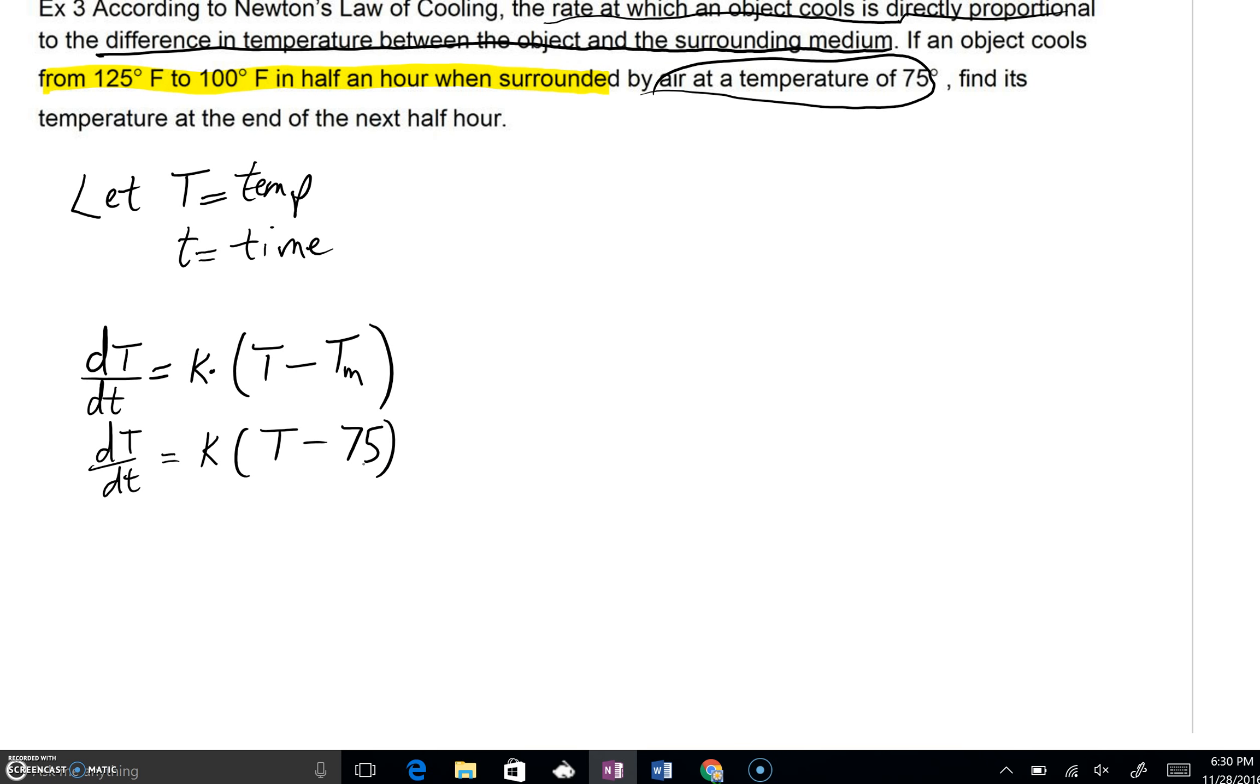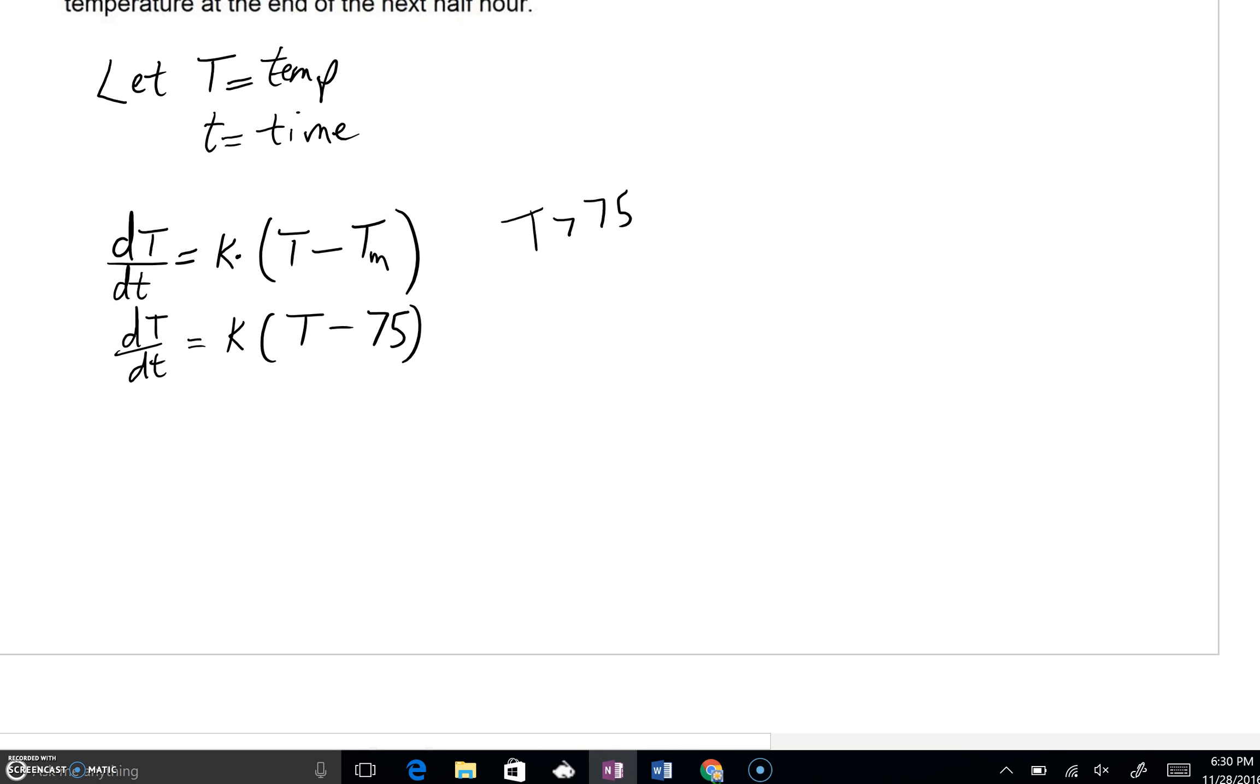Now because this is Newton's law of cooling, we're going to see that this object is heated up and it gradually cools down. We're going to be assuming that T, the temperature of the object, is above 75 degrees, above the room temperature. Now that's going to come into play in a little bit. But let's separate our variables, get our capital T's together on one side. I can divide by T minus 75 on both sides. Get everything that's not a capital T on the right side. So multiply both sides through by dt, the little dt that is. And at this point we will just take anti-derivatives.